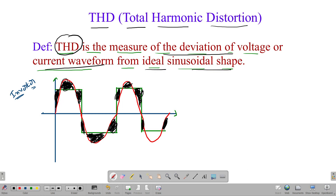So if you want exactly AC, but what you are getting is a square wave, the remaining part is the harmonic content. Whether it is a current waveform or a voltage waveform, the deviation of the waveform from its ideal condition is the THD. So it finds the total waveform deviation.